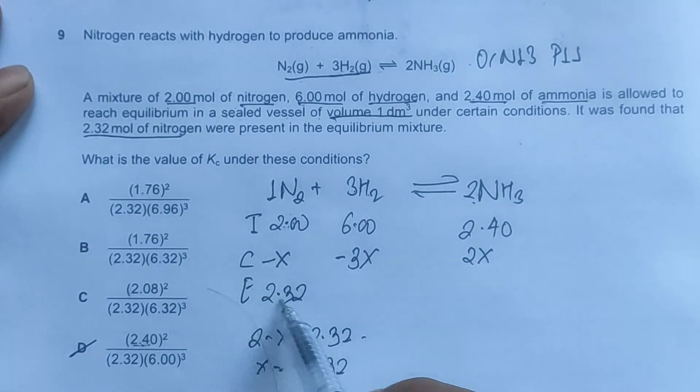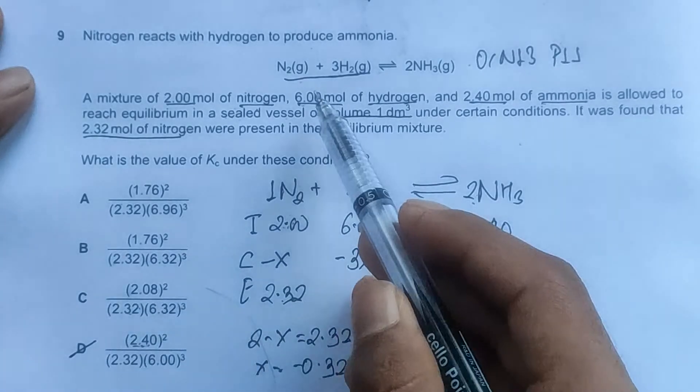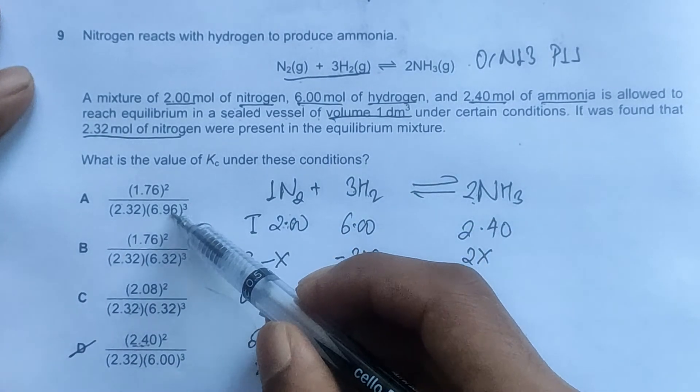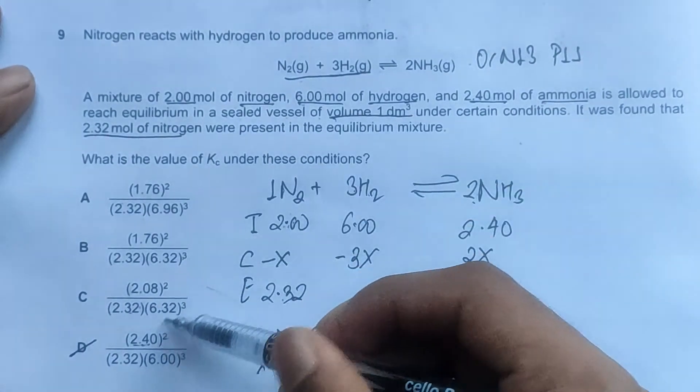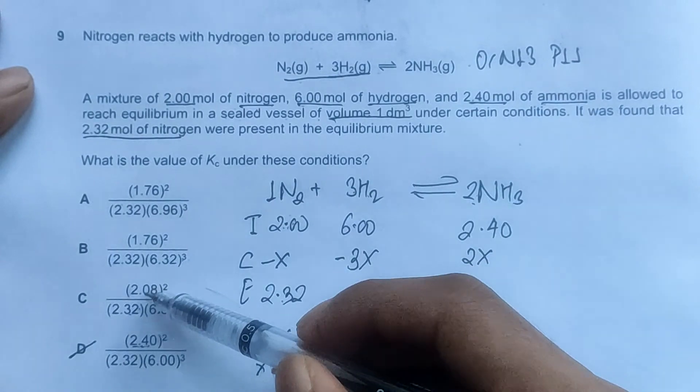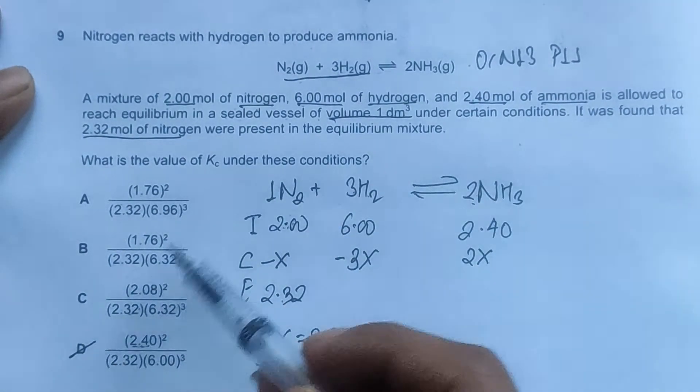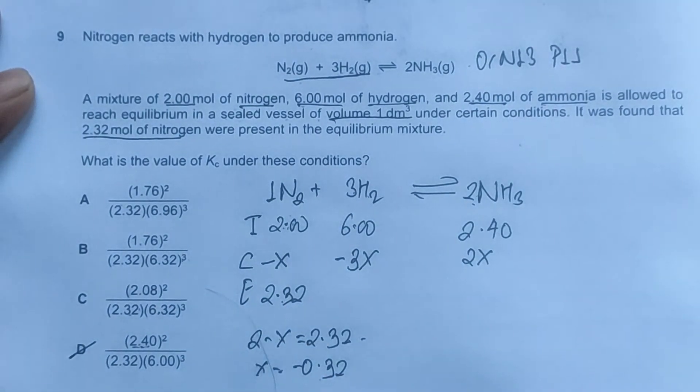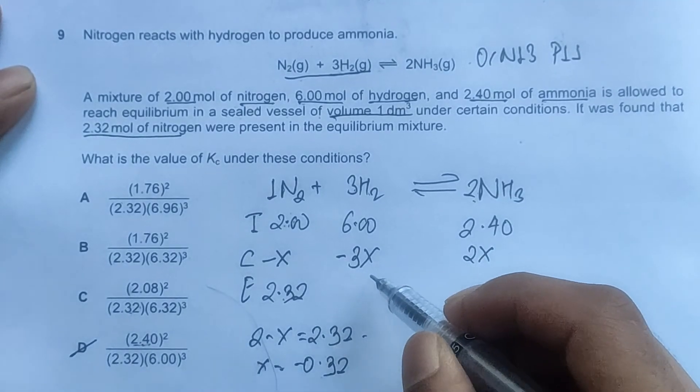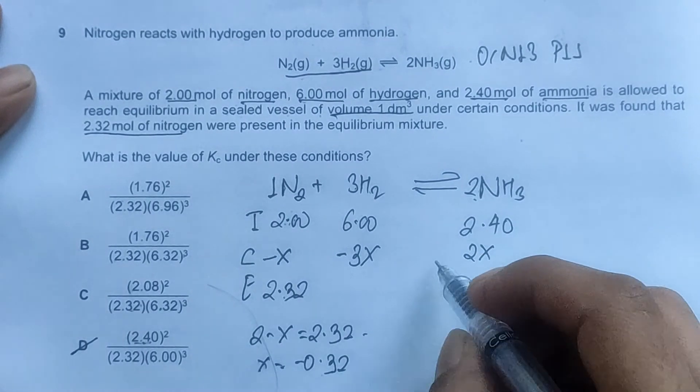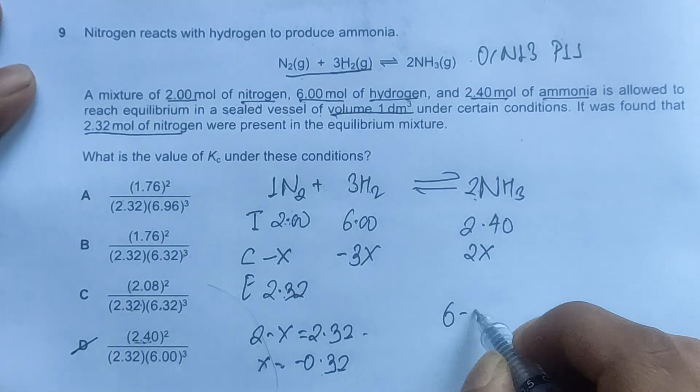From the other options, we have 2.32 moles of nitrogen everywhere, that satisfies. And for hydrogen, we have 6.96, 6.32, 6.32—these all are greater than 6. And for ammonia, we have 2.08, 1.76, 1.76—all these are less than 2.40. So we'll have to conduct our calculations.